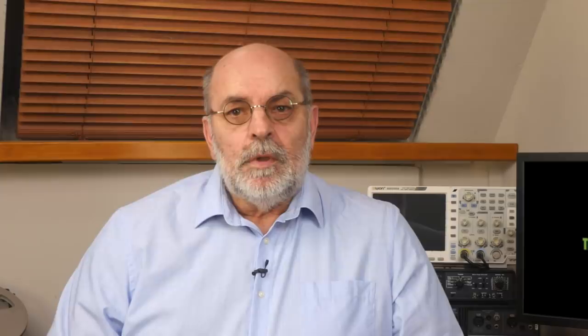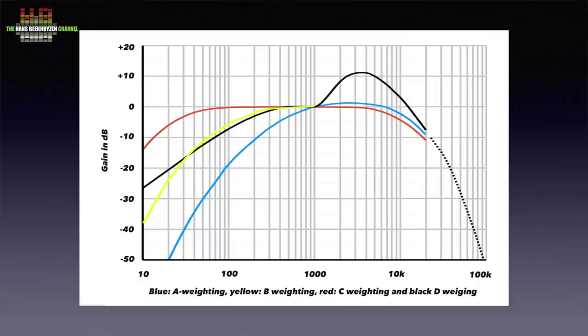dB stands for decibel, SPL for sound pressure level, and A stands for A-weighting. SPL measurements are normally done to get an impression of how loud we experience a given sound. Since our hearing is not equally sensitive to all frequencies at all levels, several weighting curves have been developed. The A curve is the blue curve in this graph and is the correct curve for measuring loudness at higher levels. Our ears are less sensitive to low frequencies and most sensitive around 3 kHz. So the dBs used for loudness are quite different from those used for measuring the dynamic range of a digital player, where all frequencies are weighted equally.